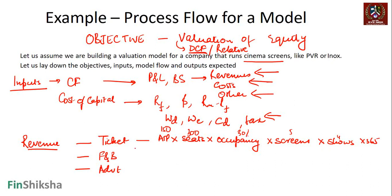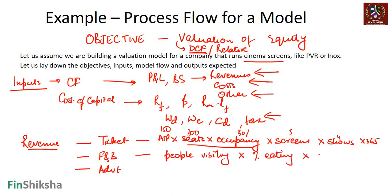Food and beverages: out of the number of seats and occupancy - which is basically the number of people visiting - you can multiply these to get people visiting into percentage eating, how many of them are eating something, into average spend. And that gives a broad calculation for food and beverages. Advertising is straightforward - you can just calculate the advertising revenue probably per screen on average during the year. If you have historical data, you can just calculate, make an assumption on that, and move on.